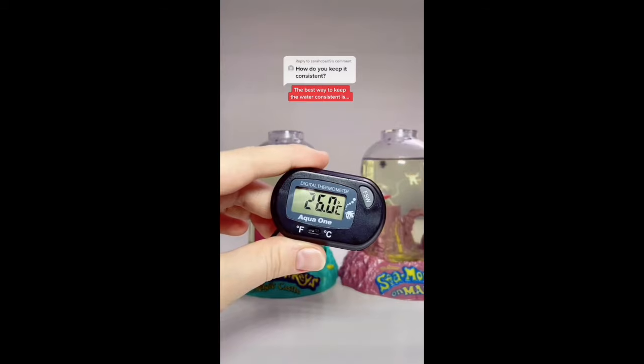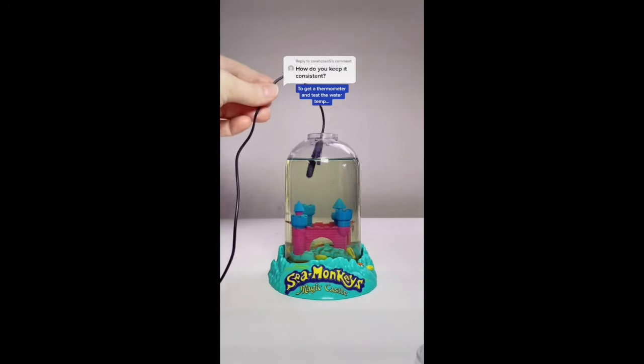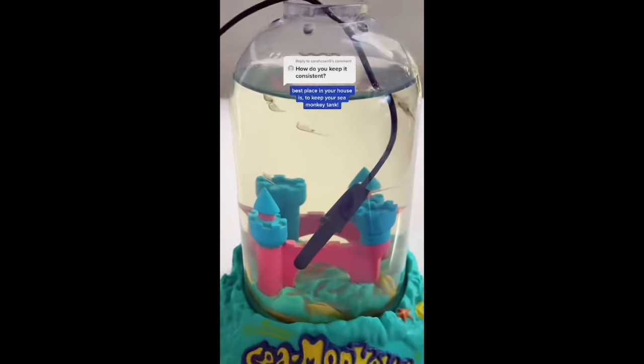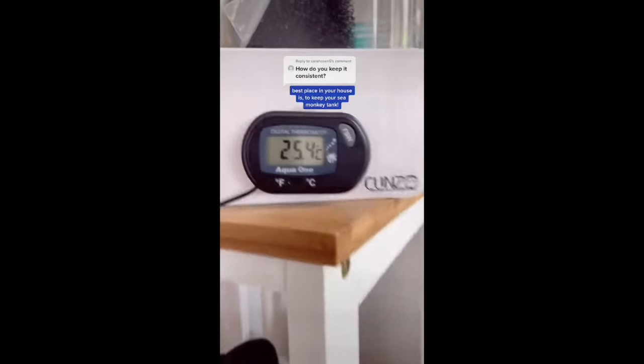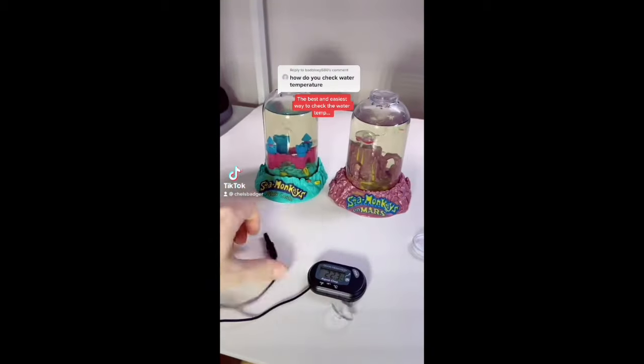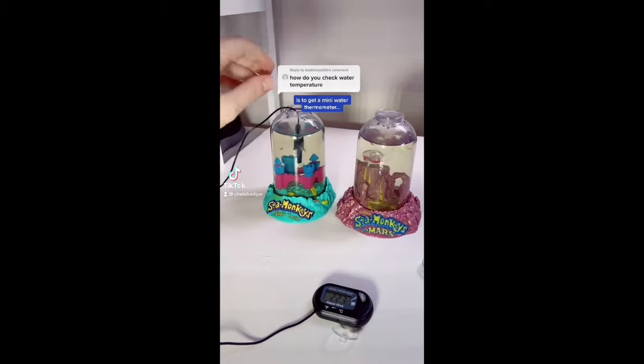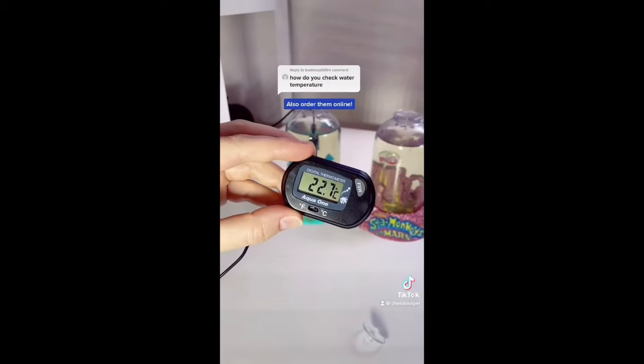The best way to keep the water temperature consistent is to get a water thermometer and test the water temperature. This will help you work out where the best place in your house is to keep your sea monkey tank. The easiest way to check the water temperature is to get a mini water thermometer. Most pet stores have them and you can also order them online.